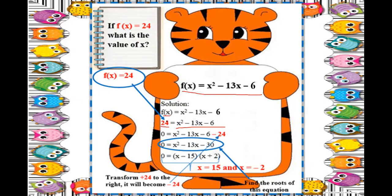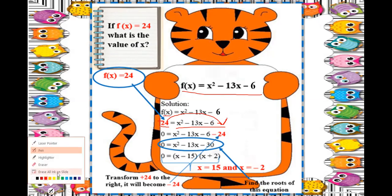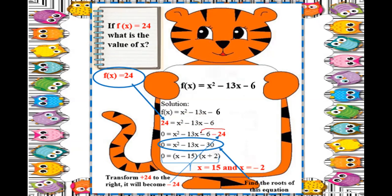To solve, transpose 24 to the right side. Since it is positive on the left, it becomes negative on the right using the subtraction property of equality. Simplify the constants: negative 6 and negative 24 have the same sign, so add them — 6 plus 24 is 30, and the common sign is negative. We get x squared minus 13x minus 30.